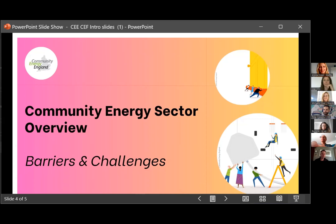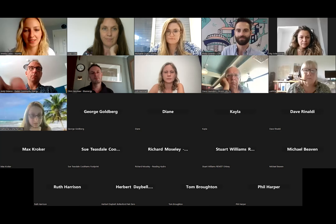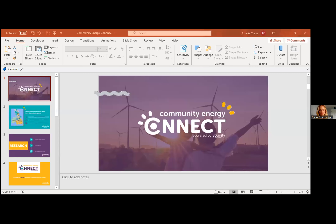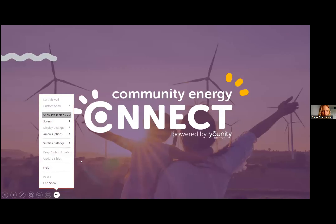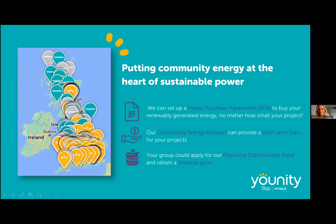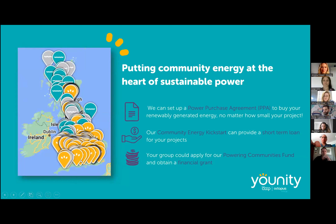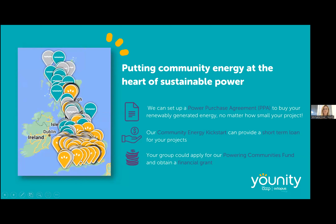Thank you, Phil. So I'm going to give a super quick overview on Unity and why we're supporting the community energy sector. For those of you that don't know, my name is Michaela Coyer. I'm head of Unity. Unity is a joint venture between Octopus Energy and Midcounties Cooperative. We're very fortunate that we currently work with about a third of the community energy sector. The core of what we do is supporting groups via power purchase agreements.